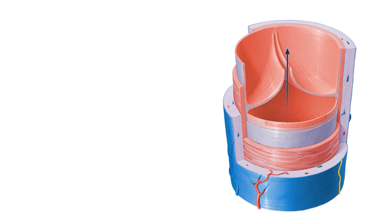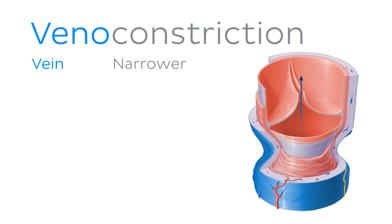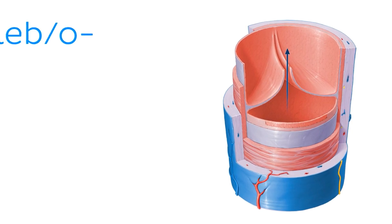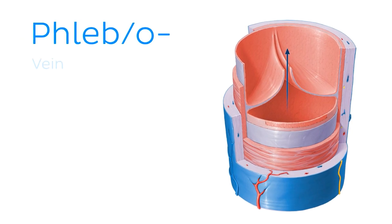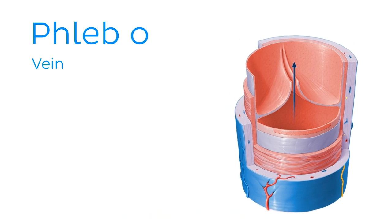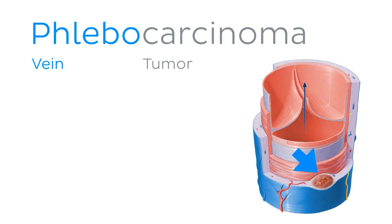The same idea applies to veins, where we use the root veno — for instance, venoconstriction. Something not as obvious, though, is the root phleb or phlebo, which also refers to veins, like in phlebocarcinoma, which is a malignant growth on the wall of a vein.